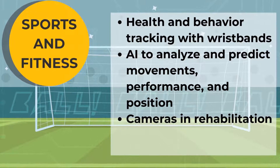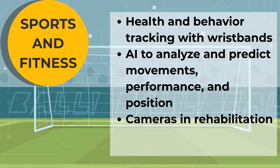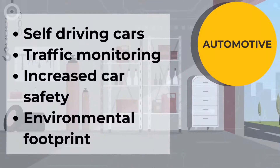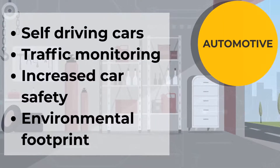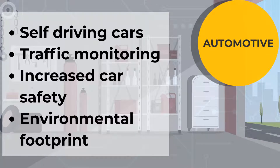And believe it or not, even in sports and fitness, health and behavior through wristbands can be tracked. Athletic uses of AI allow you to analyze and predict movements, performance, and position, and even trainers use cameras in their rehabilitation. In the automotive world, self-driving cars can make transportation safe and efficient, cameras can be used for traffic monitoring, and automotive systems can be designed to increase safety and even track environmental footprints of vehicles.